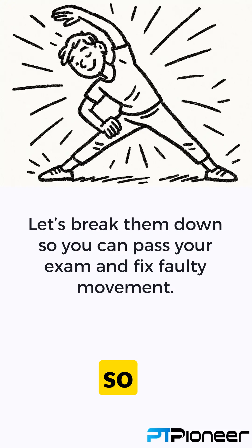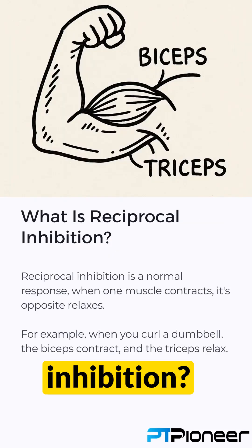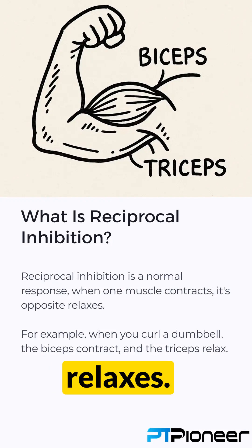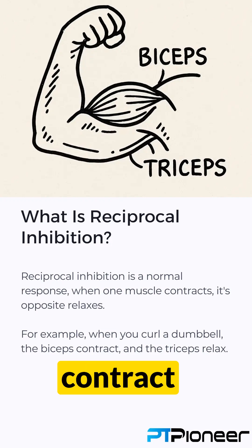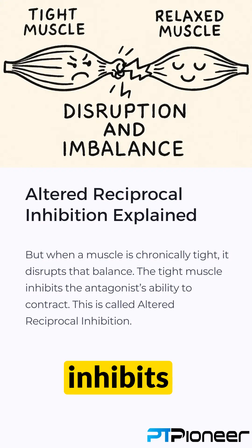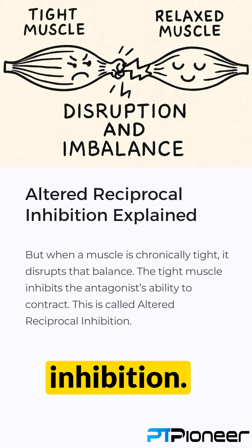Two of the most important yet confusing concepts in NASM CPT are altered reciprocal inhibition and synergistic dominance. Let's break them down so you can pass your exam and fix faulty movement. Reciprocal inhibition is a normal response — when one muscle contracts, its opposite relaxes. For example, when you curl a dumbbell, the biceps contract and the triceps relax. But when a muscle is chronically tight, it disrupts that balance — the tight muscle inhibits the antagonist's ability to contract. This is called altered reciprocal inhibition.